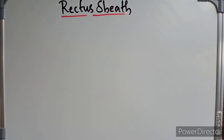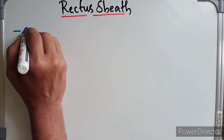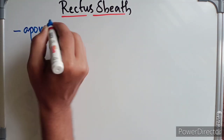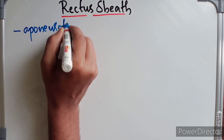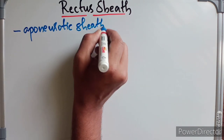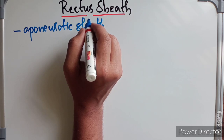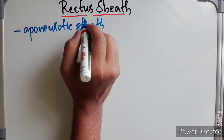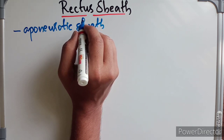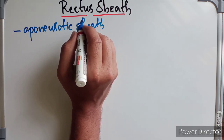Hello guys, welcome to Matan. In this video we are going to discuss about rectus sheath — its formation, features, contents and clinical correlation. Rectus sheath is an aponeurotic sheath enclosing the rectus abdominis muscle. It is derived from the aponeurosis of the flat muscles of the anterior abdominal wall — namely the internal oblique, external oblique and transversus abdominis.